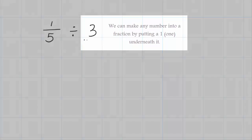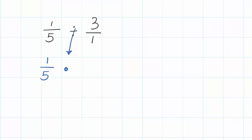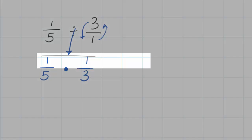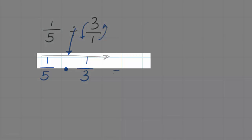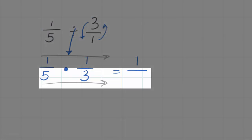Now we go through the same steps as in the first example. I keep my first fraction exactly the same — one-fifth. I change division to multiplication. I take the reciprocal of my second fraction — three-over-one — so the denominator becomes the numerator and the numerator becomes the denominator, giving one-over-three. I multiply numerator times numerator: one times one is one. Denominator times denominator: five times three gives me fifteen.